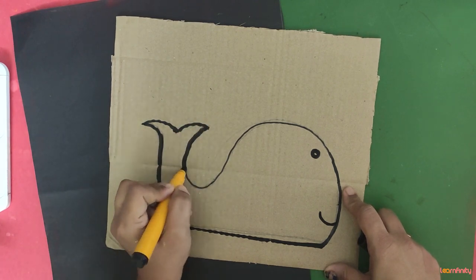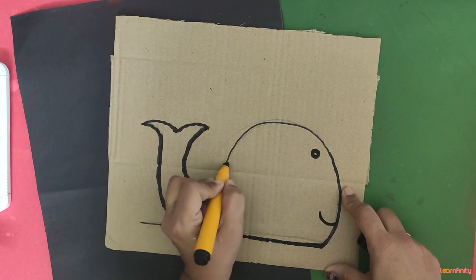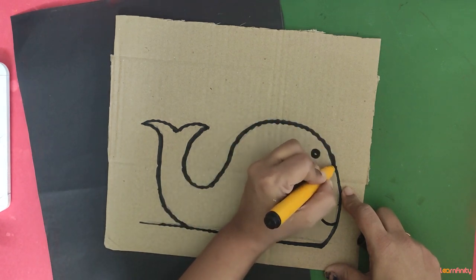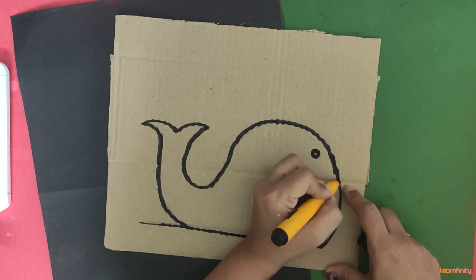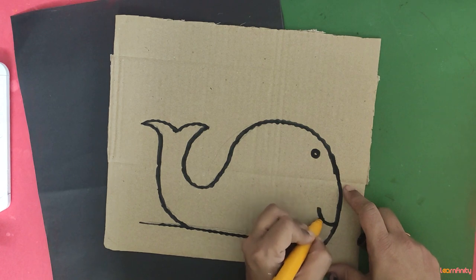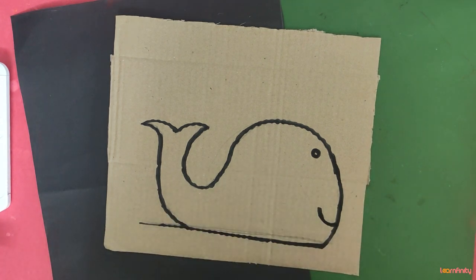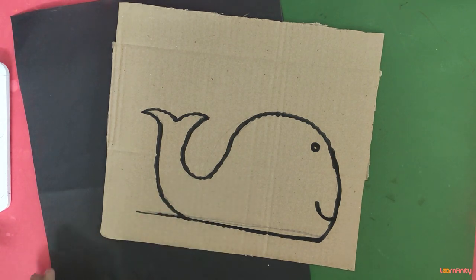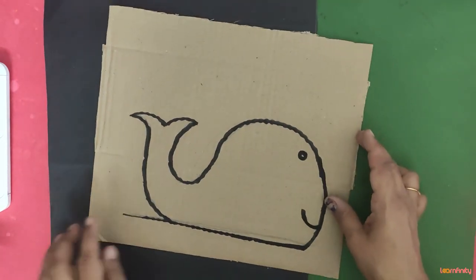A line going up and down, it's a simple curve line. Okay, so this shape you have to draw, okay. Now you have to cut this shape.